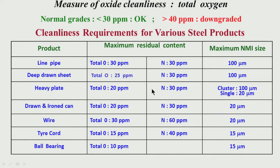Quality is getting quantified here; it is no longer qualitative. While producing line pipe steel, we cannot go to a level of total oxygen more than 30 ppm — it is not acceptable. Nitrogen more than 30 ppm is not acceptable. Inclusion size more than 100 microns is not acceptable. These are the levels of quality which are nowadays demanded from steel. Ball bearing and tire cord are extremely stringent products with extremely demanding requirements.